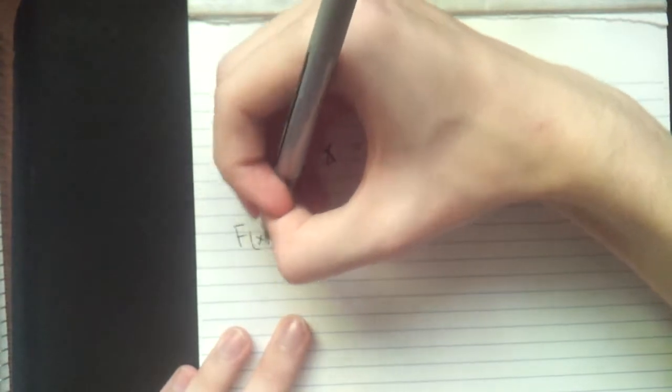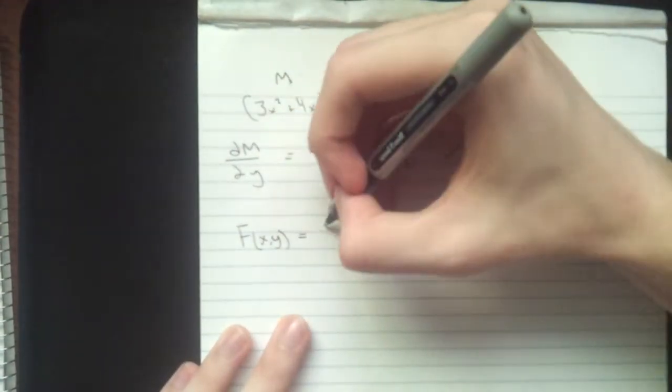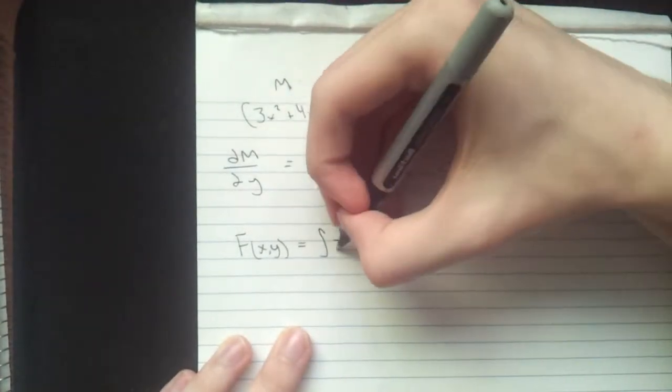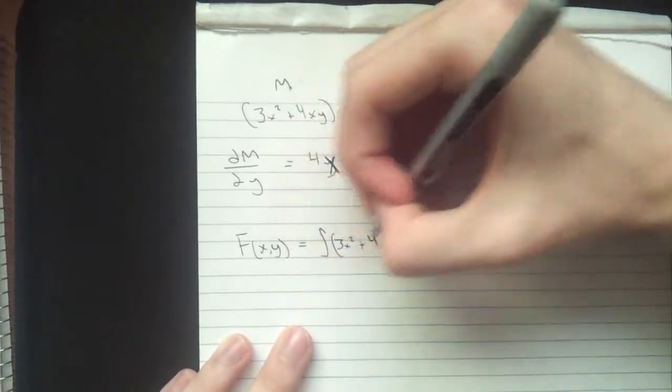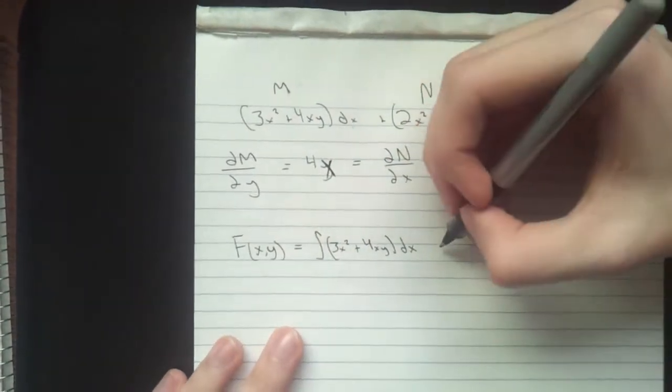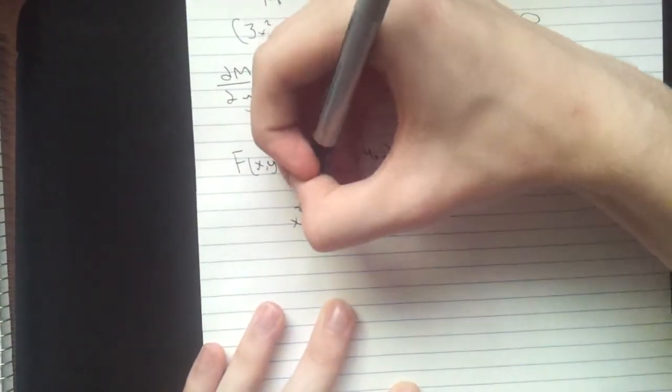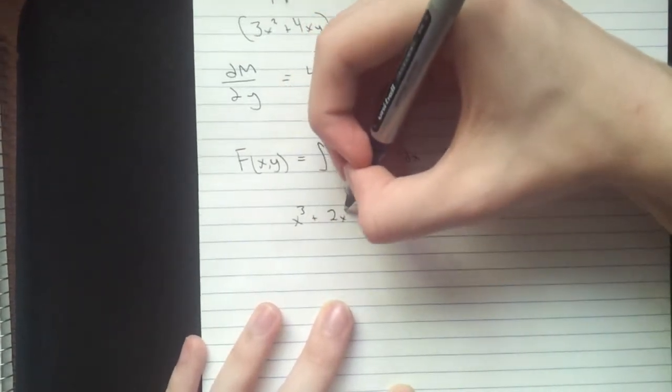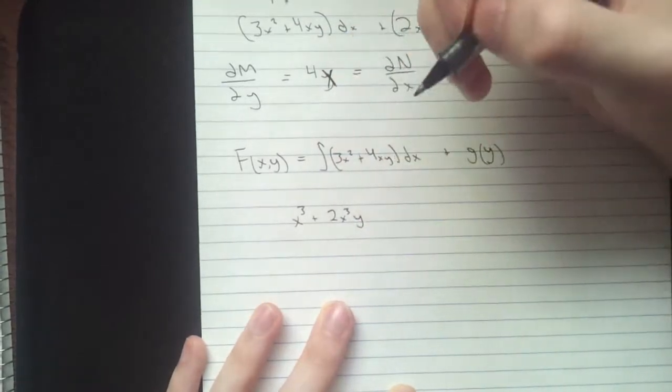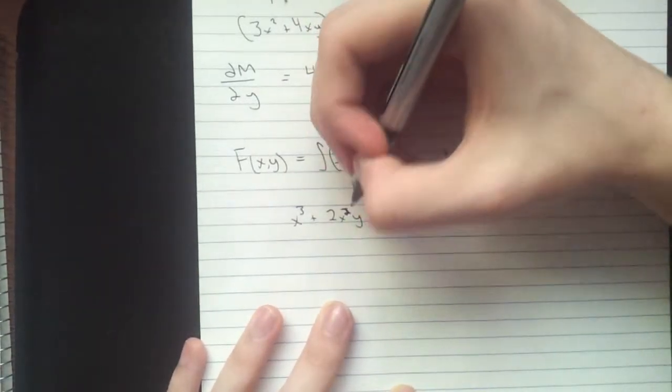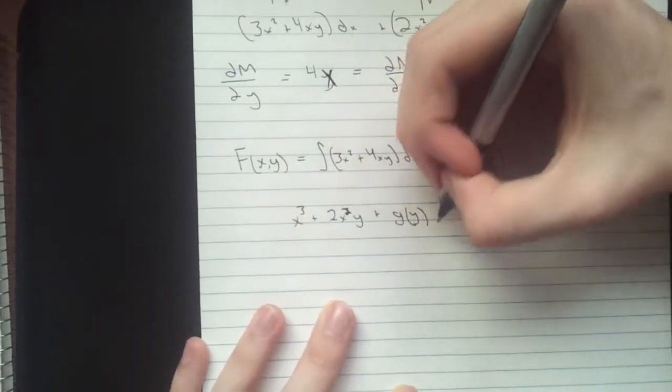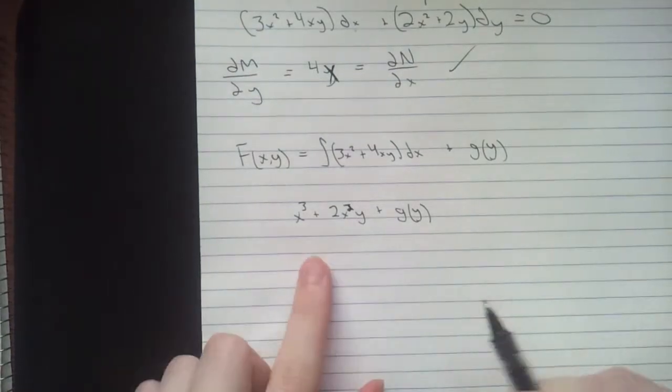So our first step here, capital F of x and y equals the integral of M, which is 3x squared plus 4xy dx, plus our g of y. And then when we compute that integral, we're going to get x cubed plus 2x squared y plus g of y. This is, of course, still capital F of x, capital F of x of y.